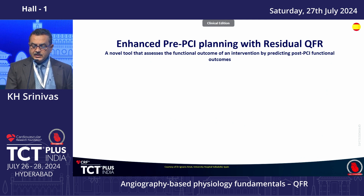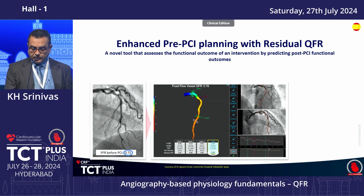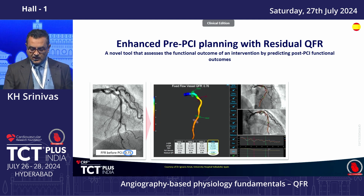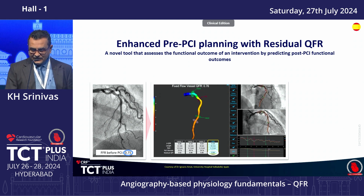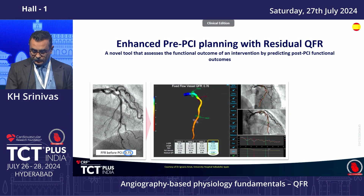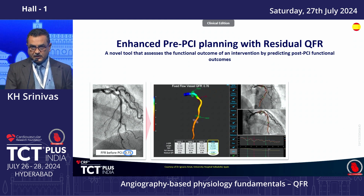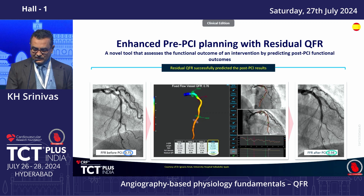PCI can be planned based on residual QFR data. The model uses residual QFR as one of the parameters to assess from where to where and what the anticipated result would be. If optimal residual QFR is not achieved post-PCI, we can identify unattended lesions and fix them. Performing post-PCI QFR can confirm that an optimal result has been obtained, similar to how FFR is used to address residual lesions.